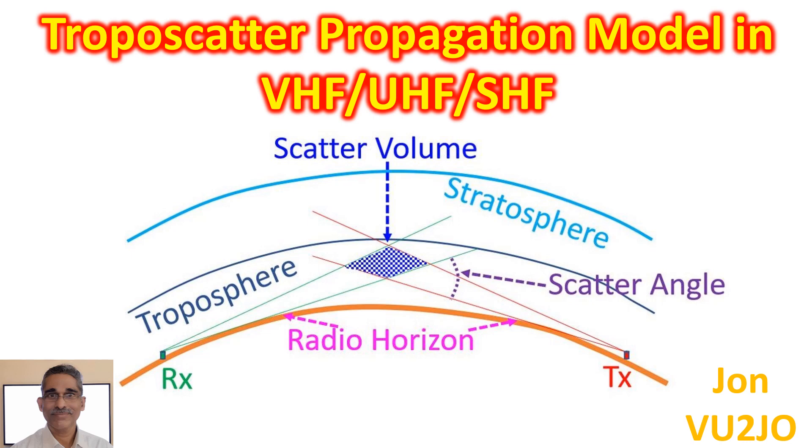Tropospheric scatter is said to be the most reliable propagation mode for working DX on VHF, UHF and microwave. Other modes like duct propagation, sporadic E, auroral propagation and transequatorial propagation are less reliable than tropospheric scatter.